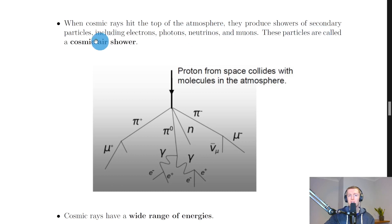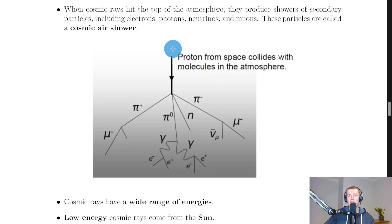they produce showers of secondary particles including electrons, photons, neutrinos, and muons. These particles are called a cosmic air shower. So here you can see that if a proton from space collides with molecules in the Earth's atmosphere, it's split up into a shower of different types of particles. We've got some pions, some muons, some gamma rays, and